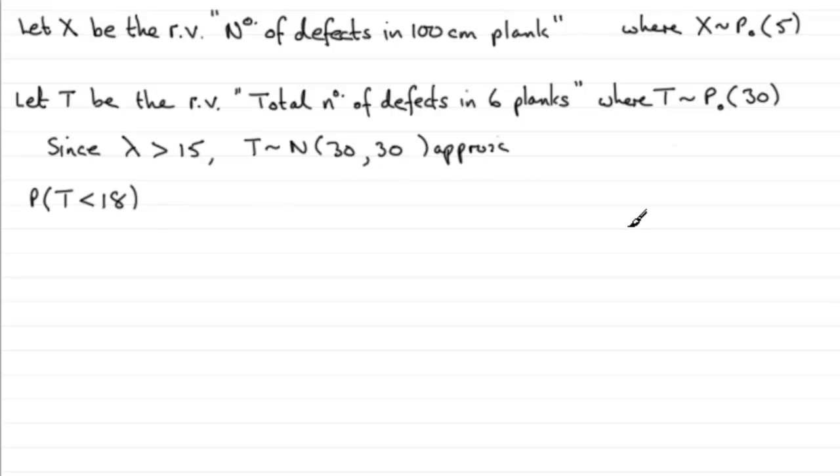Using this normal approximation, I want to draw my normal distribution for the random variable T with a mean of 30. I need to put this value of 18 in, but we've got to be very careful with something like this. I'm going to draw a dotted line down through here. So this value is 18, but why have we got to be careful?